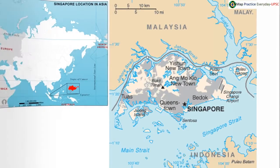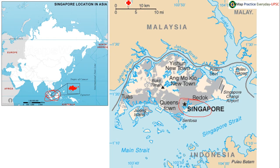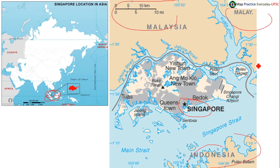Trump-Kim meet likely in Singapore — Singapore is a city-country located in the eastern part of Asia. This is where the city of Singapore is located. The capital city of Singapore is Singapore itself, and its neighboring countries include Malaysia and Indonesia.